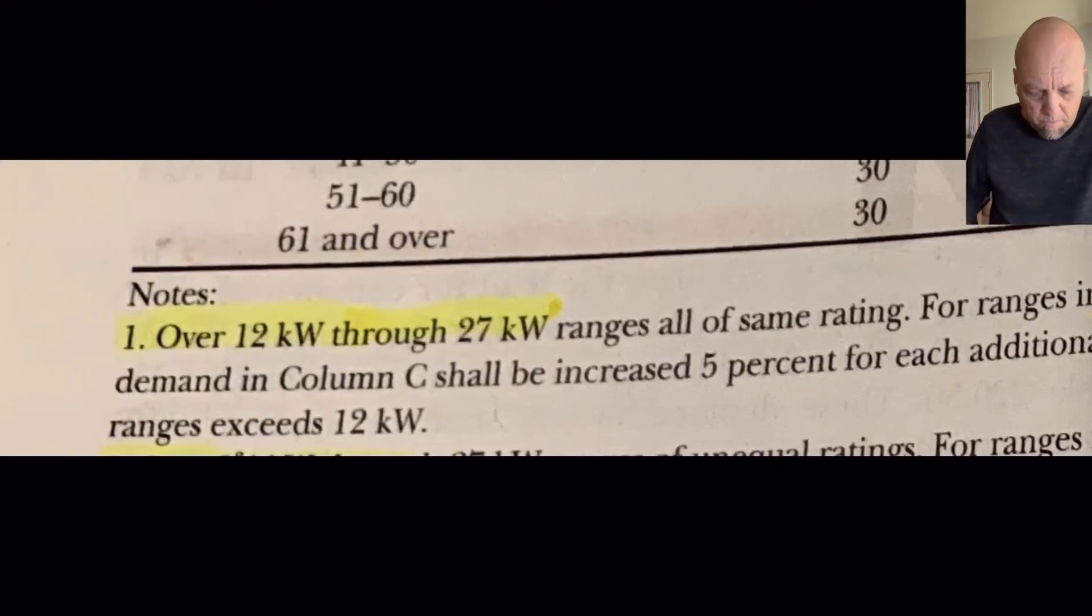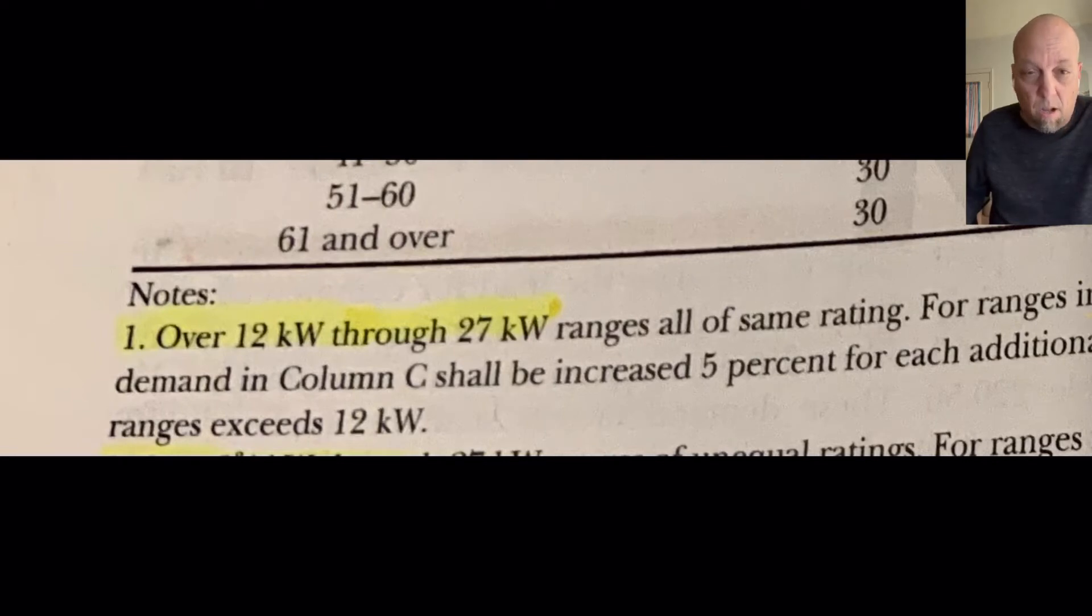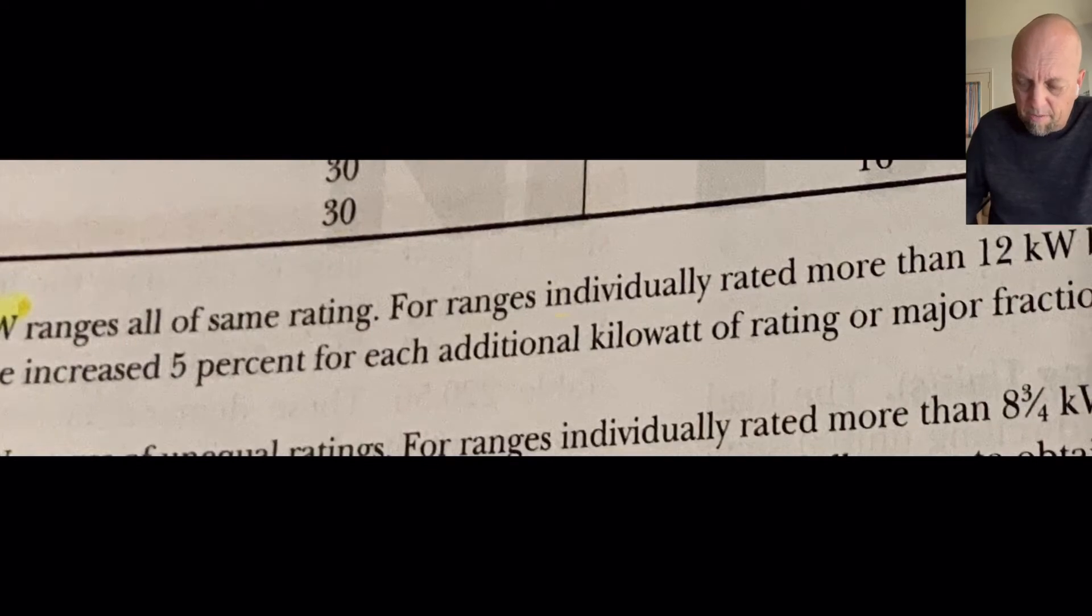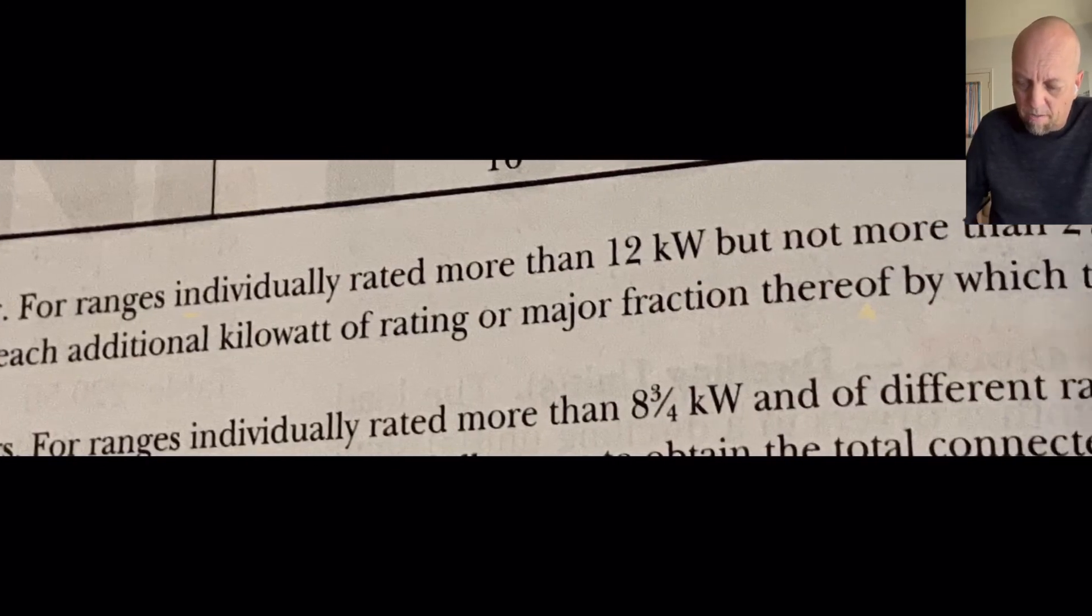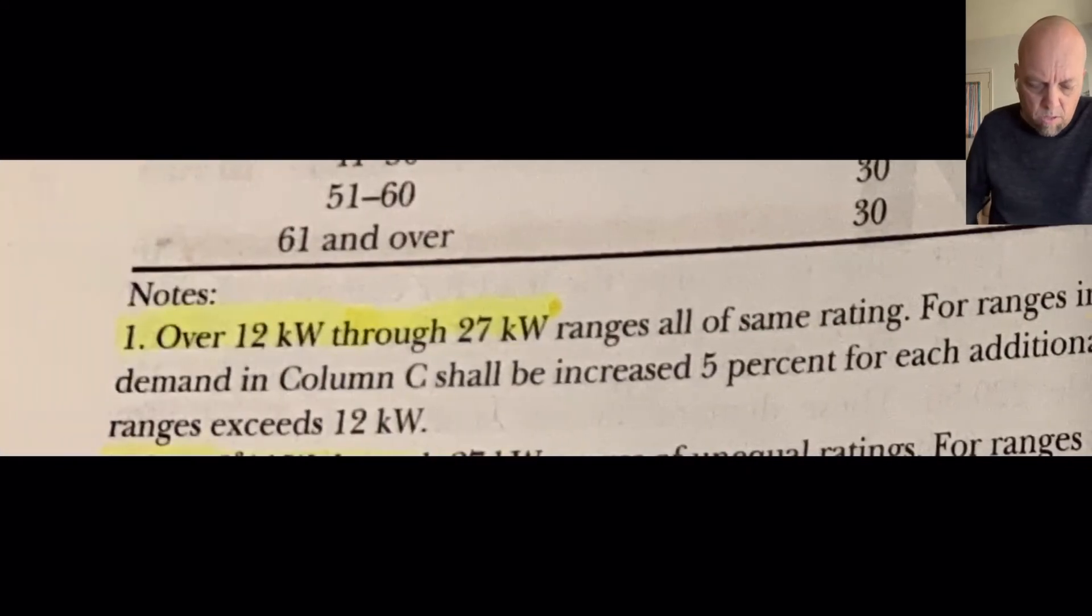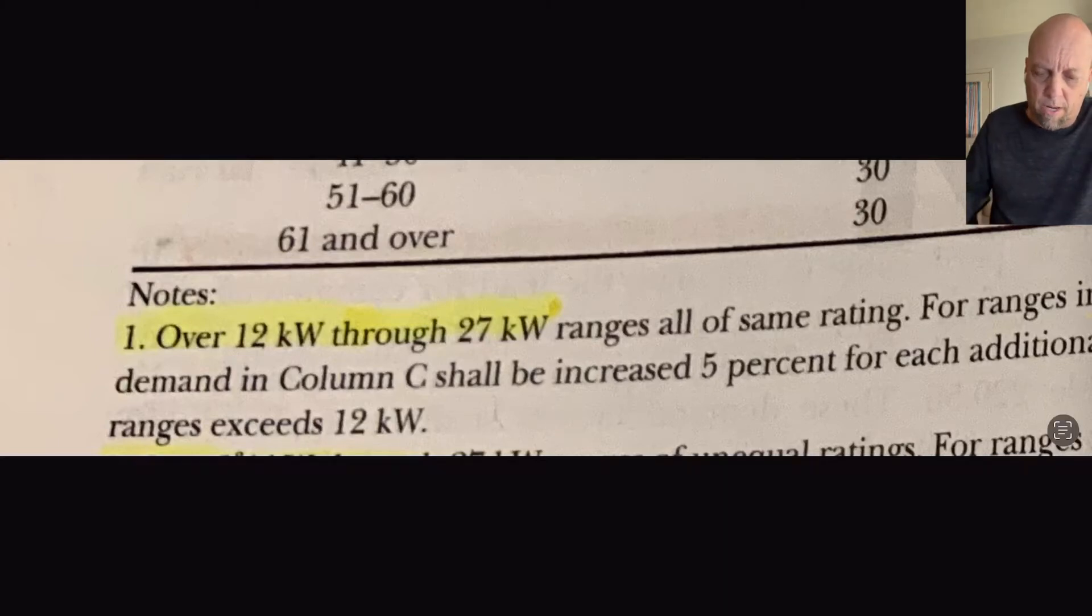the maximum demand in column C shall be increased 5% of each additional kilowatt of rating or major fraction thereof by which the rating of the individual ranges exceed 12kW. So, that being said, 12kW is kind of the thing. 12kW is the limit. After 12kW, you take this note into consideration.